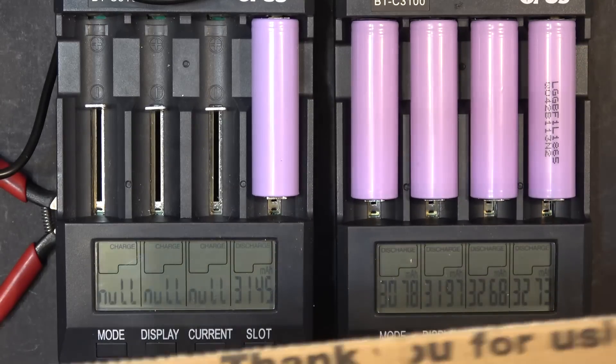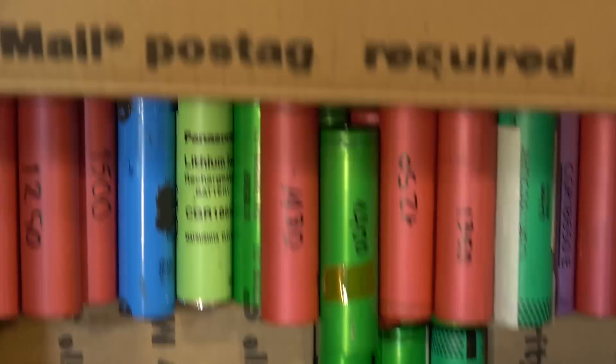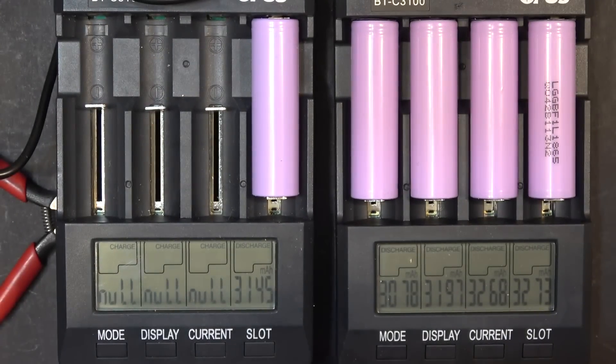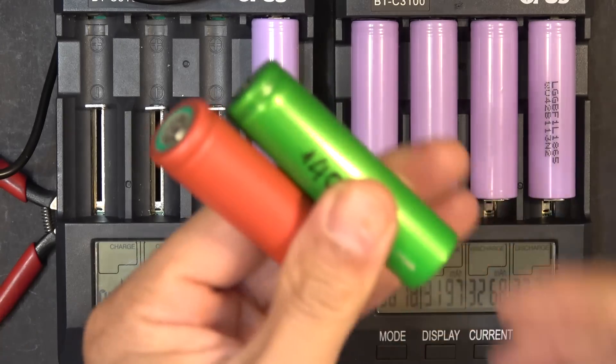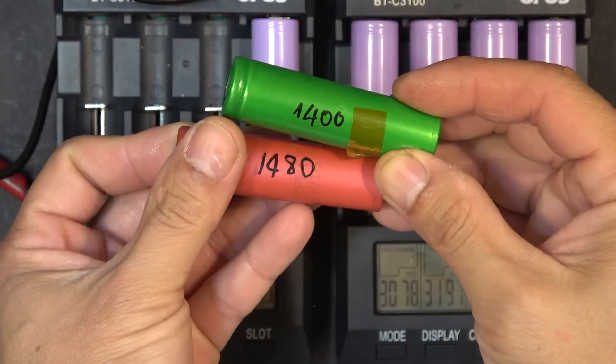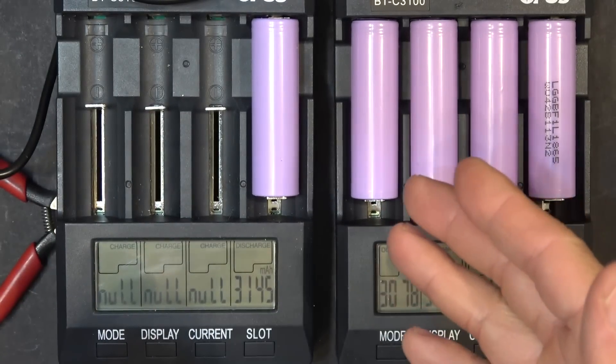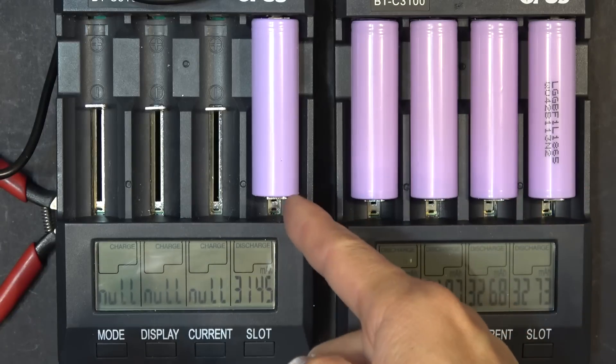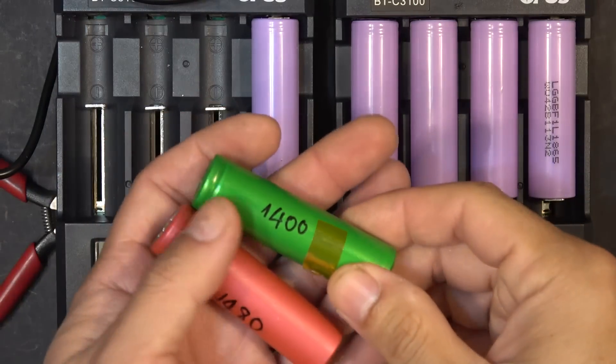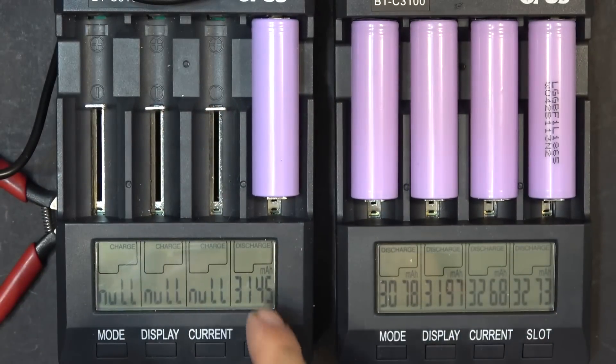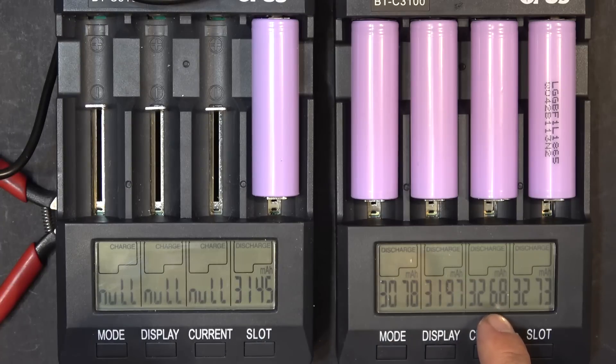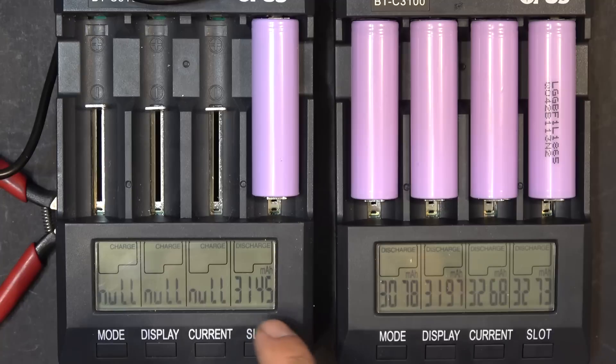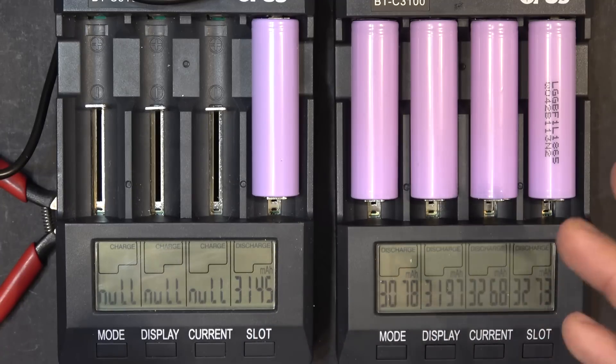So I've been testing my 18650 cells here, a lot of them, and I've been testing them at 500 milliamp discharge rate. And according to this test, it would have been a lot faster if I just test them at one amp discharge rate. That will reduce my testing time in half. Even though the one amp discharge rate here I got less capacity versus the 500 milliamp, I would say the difference is just 100 milliamp, so that's not a lot of difference.